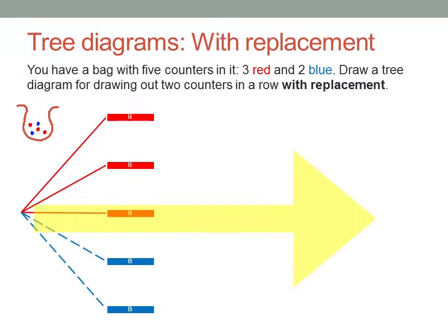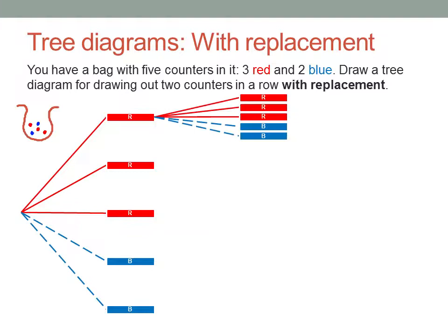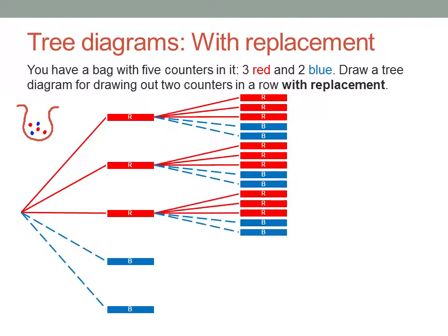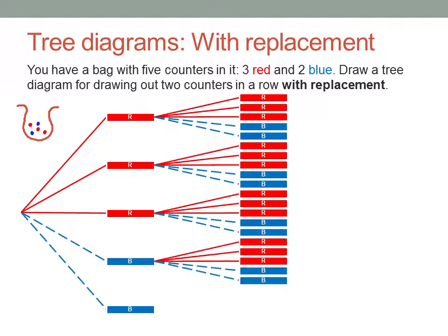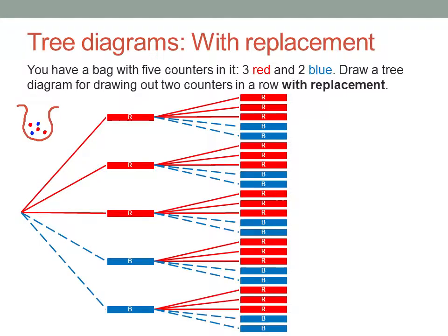That's the first action. Now move right and work out the second. If the first counter was red, you've replaced it back into the bag, so the second one could also be one of the three red ones or one of the two blue ones — and that's the same for any of the first three options. And if the first counter was blue, again you've replaced it, so the second could be one of the three red ones or two blue ones. With replacement, there are five times five, or twenty-five possible outcomes in the sample space.